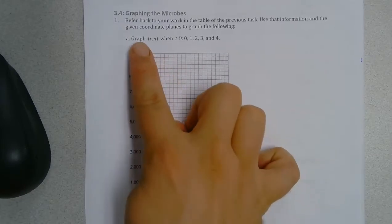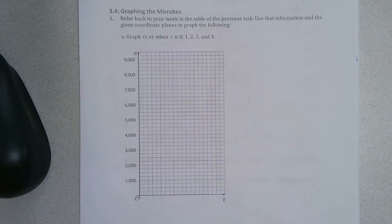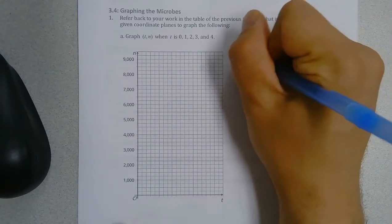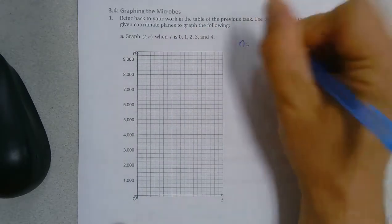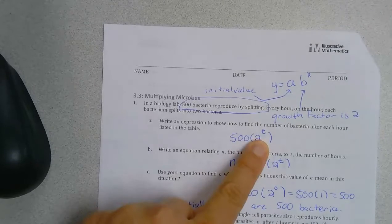So now what we're going to do is graph the time period and the number of bacteria for our first situation. So if you remember, n was equal to 500 times 2 to the t.